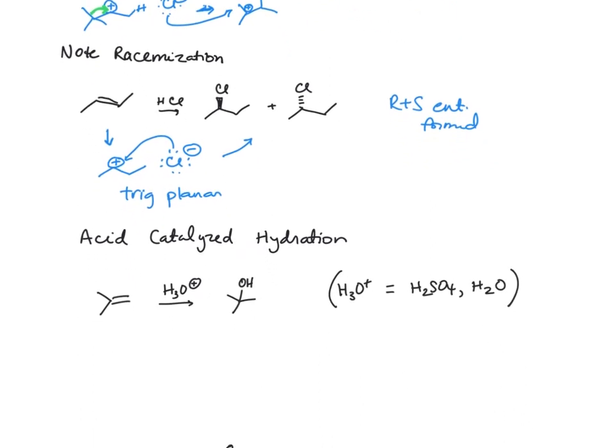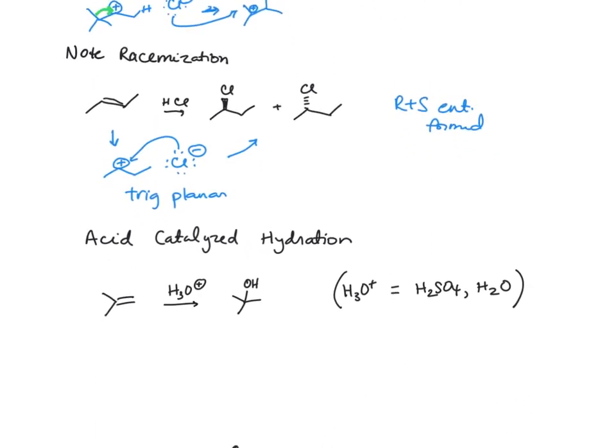Next is acid-catalyzed hydration. This is the same mechanism as in the hydrohalogenation. We have a strong acid adding to that alkene, we form the more substituted carbocation, and then in our second step water attacks. We have to be aware of rearrangement and racemization.